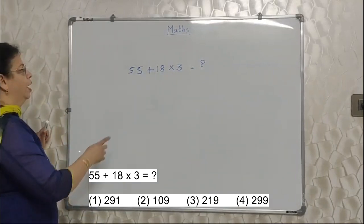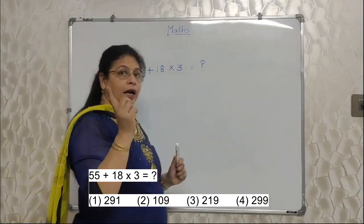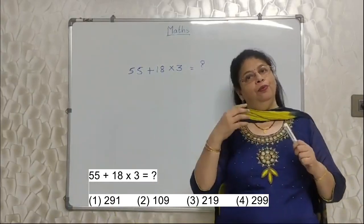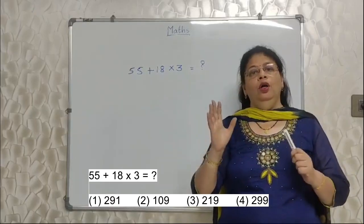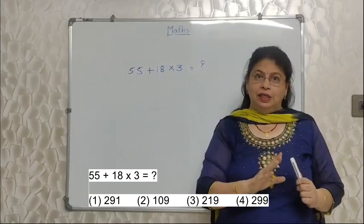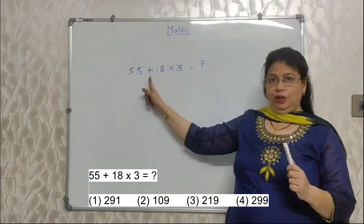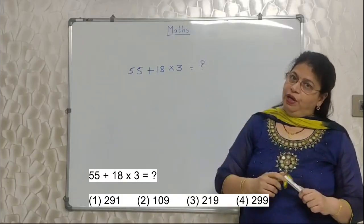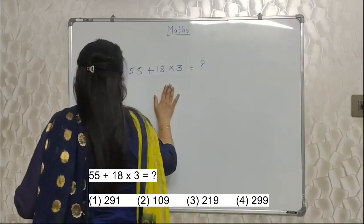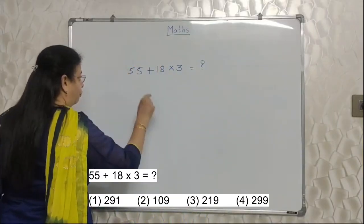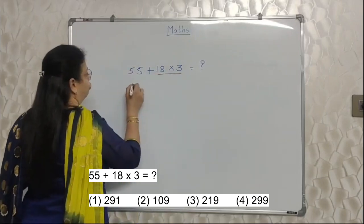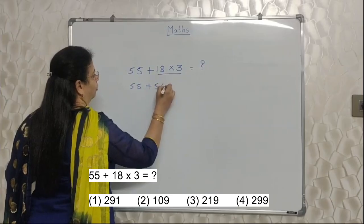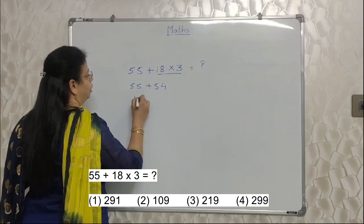See students, I have written the sum on the board. Unlike the earlier question where we did the multiplication first and multiplication was as it is first, so the probability of making mistake was relatively less. But in this case, plus is first and then multiplication. Here BODMAS plays a very important role. Here even though the multiplication is next, we have to perform this first. So 55 degree as it is, plus 18 into 3, 54. So answer is 109.